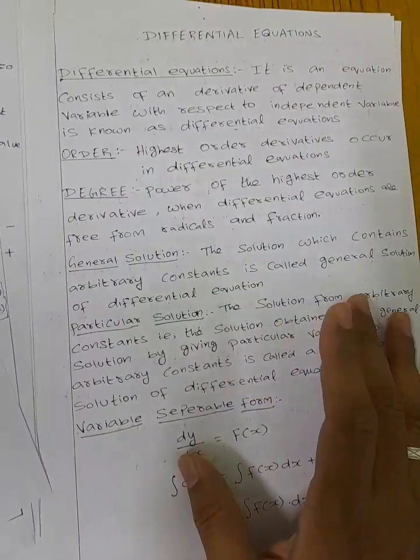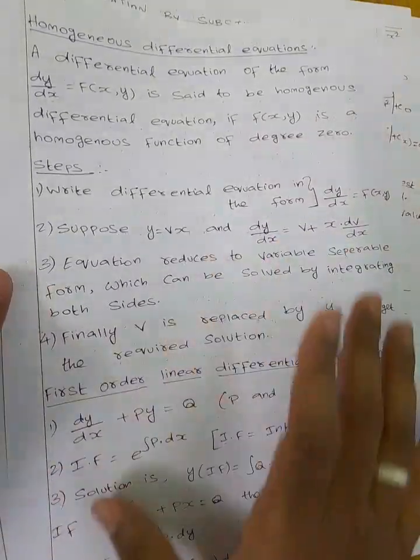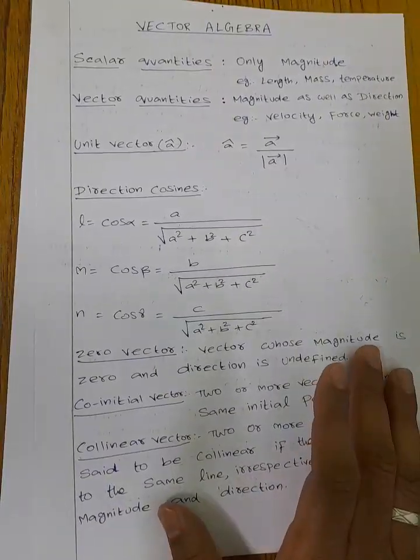Next, eighth unit: area under curve. Next, differential equations, ninth unit: degree, variable separable form, homogeneous differential equation, first order differential equation.